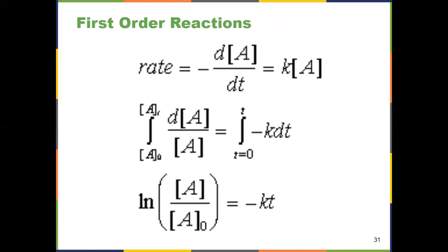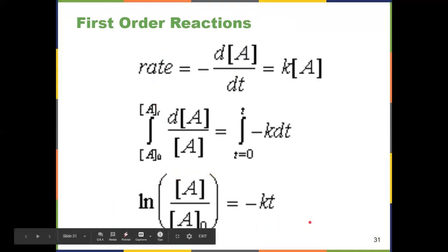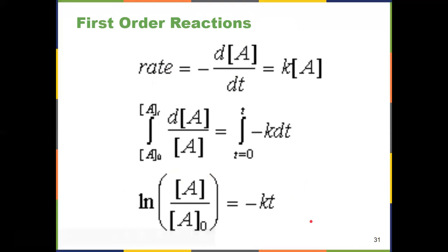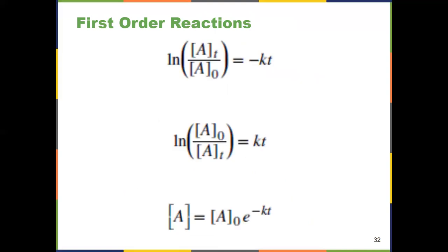On slide 31, we see the derivation of an integrated rate law. This is where the math requisites for the course come in — understanding how we get from rate equals negative change in concentration of reactant over change in time, taking integrals, and arriving at the final integrated rate law. You do not need to know the derivation, which is what's covered in the textbook and shown here. You do need to know the equation and how to use it.